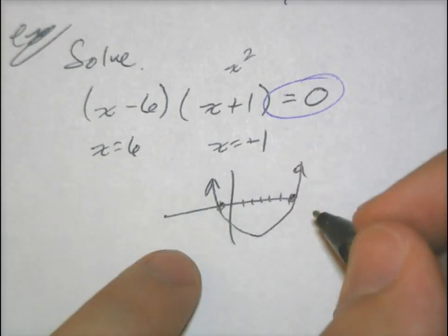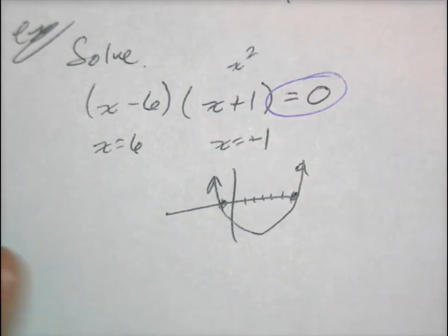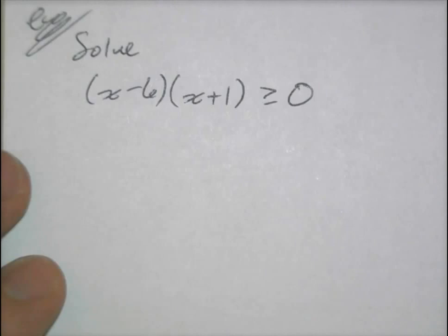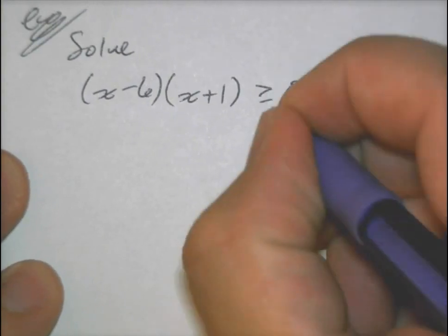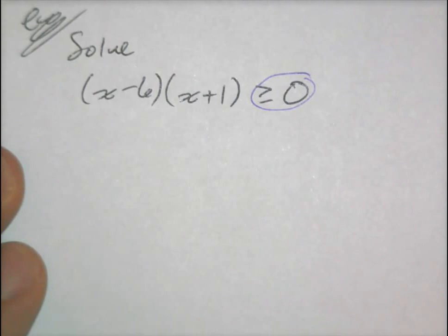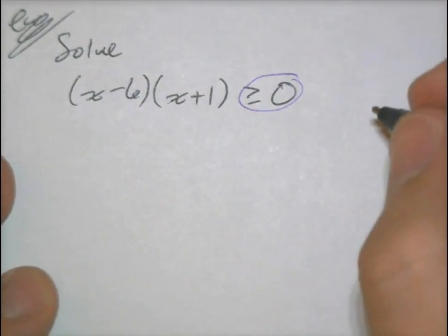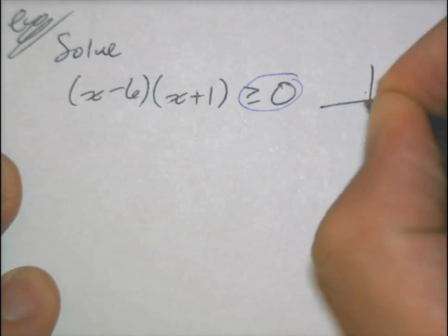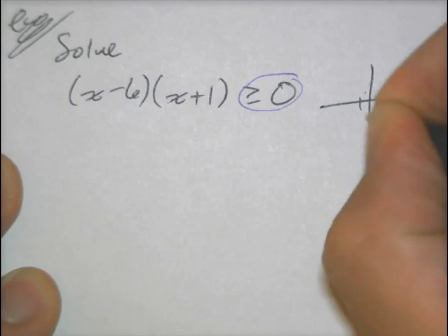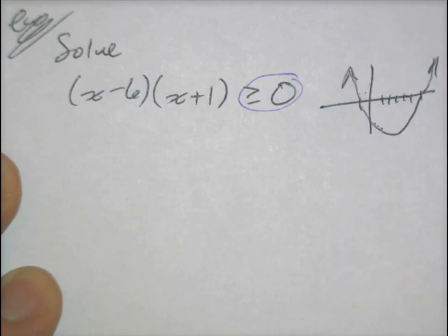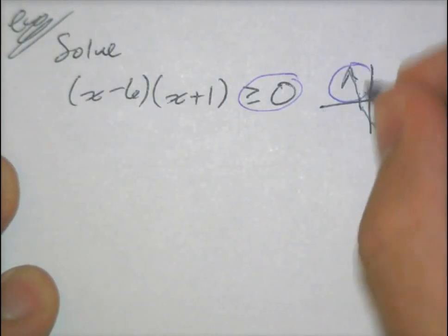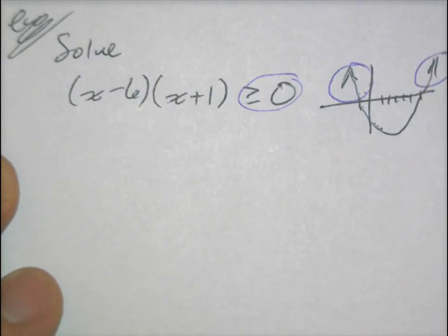So x equals positive 6 and x equals negative 1. Now here's another problem. With this one, I have the same exact equation — (x minus 6)(x plus 1) — but the only thing different is that it says it is greater than or equal to zero. So my function needs to be greater than or equal to zero. I'm going to show you a way to solve this without graphing.